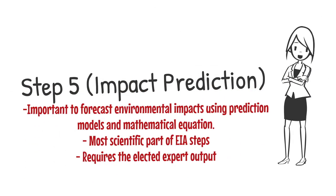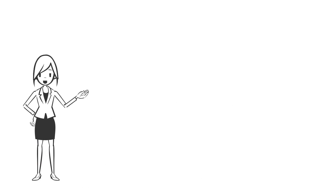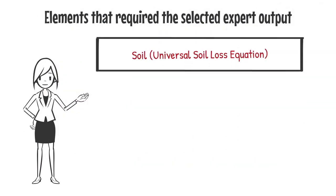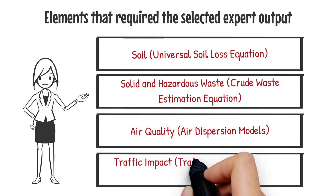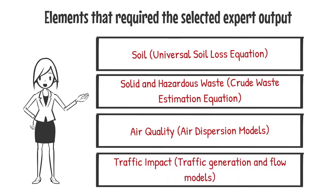Step 5 is about impact prediction. This step is important to forecast environmental impacts using prediction models and mathematical equations. This step is the most scientific part in environmental impact assessment and requires the elected expert output. The main prediction models and mathematical equations for specific environmental impacts are as follows: for soil, the universal soil loss equation is used; for solid and hazardous waste, the crude waste estimation equation is used; air dispersion models are usually used for air quality; and for traffic impact, traffic generation and flow models are used.